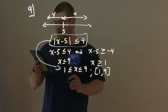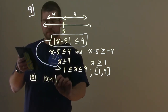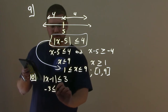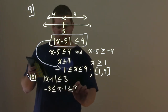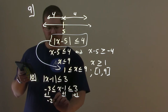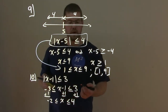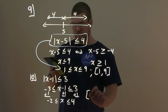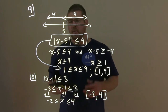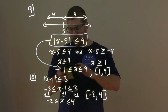Let's solve one here, number 10: absolute value of x minus 1 is less than or equal to 3. We can break this down to negative 3 less than or equal to x minus 1 less than or equal to 3. Adding 1 to all three parts: negative 3 plus 1 is negative 2, less than or equal to x, less than or equal to 3 plus 1, which is 4. In interval notation: [-2, 4] with brackets because we can equal those values.